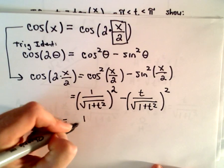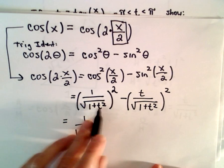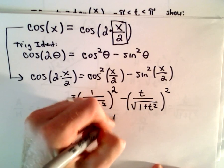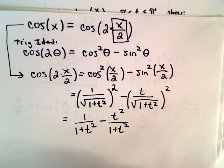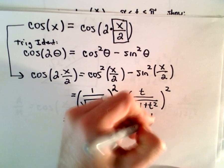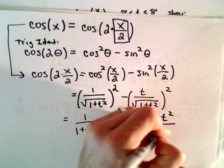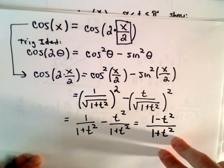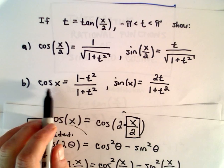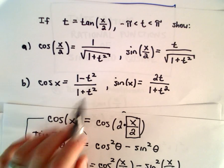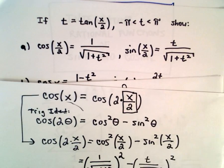Squaring the numerators and denominators: we get 1 over 1 plus t squared, minus t squared over 1 plus t squared. Since we already have common denominators, we can write this as 1 minus t squared over 1 plus t squared. So cosine x equals (1 minus t squared) over (1 plus t squared). All we're doing is using a trig identity and then using the results from part a.